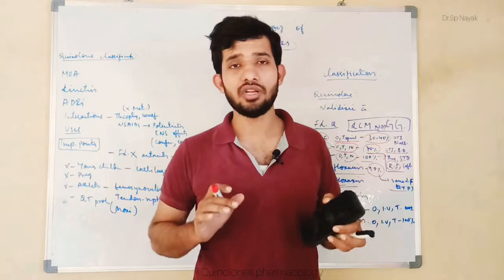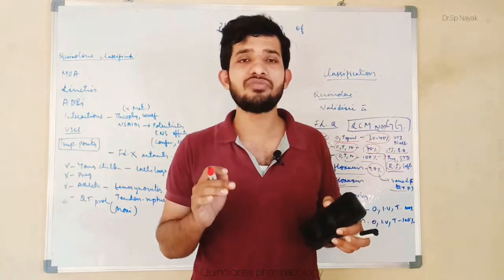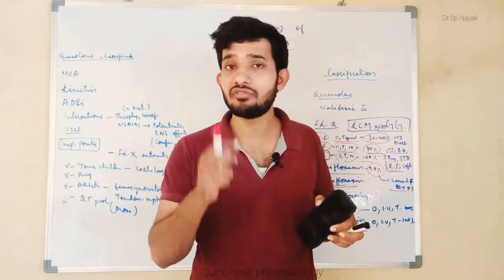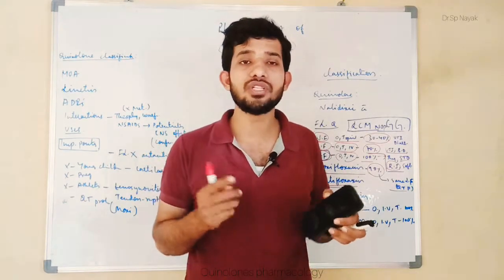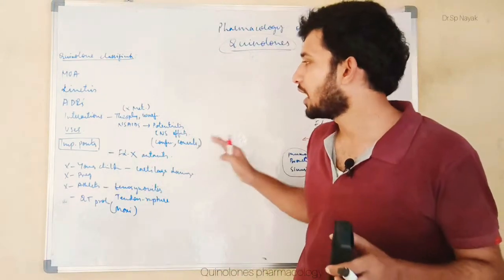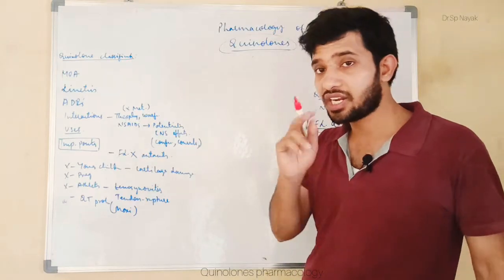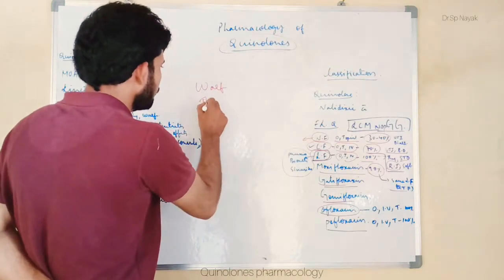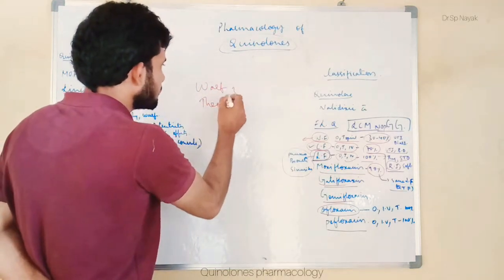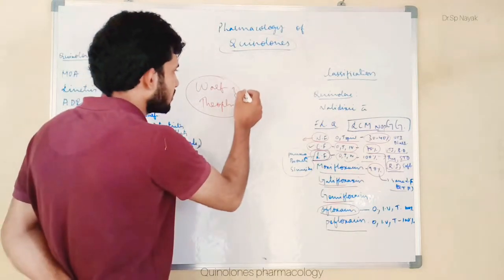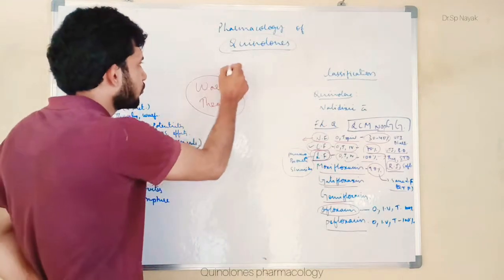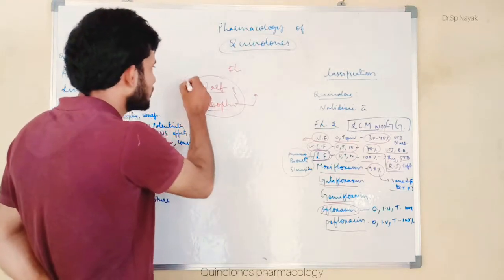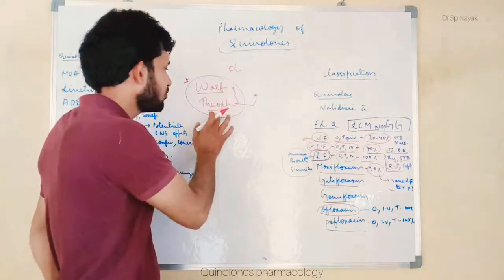Remember a very important point about fluoroquinolones: they are commonly used for soft tissue infections, typhoid, respiratory tract infections, and urinary tract infections. Regarding drug interactions, fluoroquinolones interact with warfarin and theophylline — they decrease the metabolism of both drugs, increasing their concentration. This causes warfarin and theophylline toxicity, so we have to reduce the dose of warfarin and theophylline when given concurrently with fluoroquinolones.